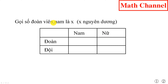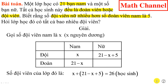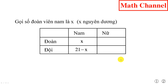Do chúng ta gọi số đội viên nam là x, như vậy ở ô này chúng ta ghi chữ x. Khi đó do tổng số học sinh nam của lớp là 21, như vậy chúng ta tính được số đoàn viên nam sẽ là 21 trừ x. Tiếp theo, do giữ kiện bài toán là số đội viên nữ nhiều hơn số đội viên nam là 5, cho nên để tính số đội viên nữ chúng ta có thể lấy số đội viên nam cộng thêm 5, tức là x cộng 5.